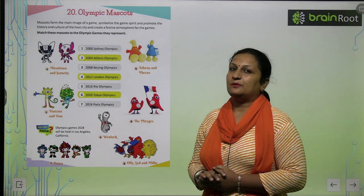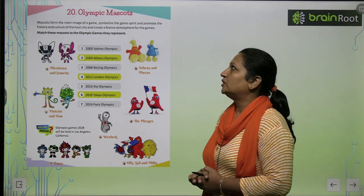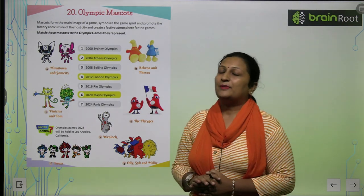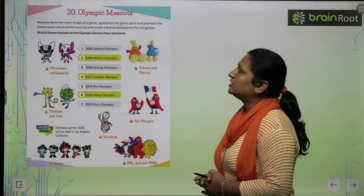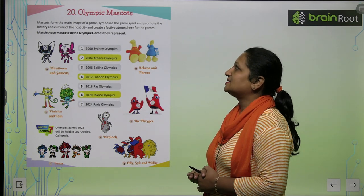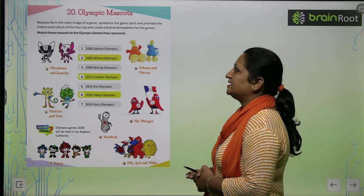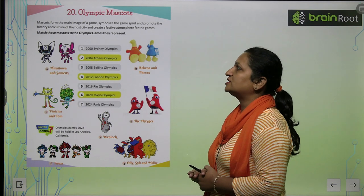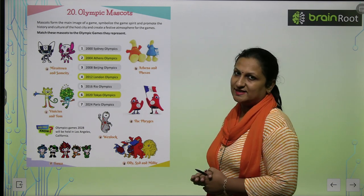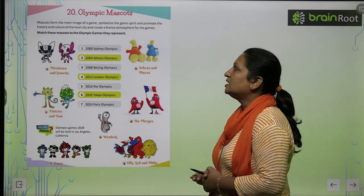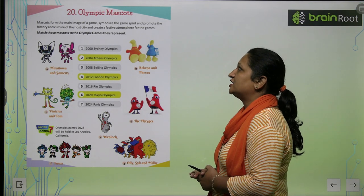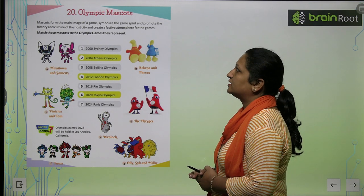Children, let's begin with chapter number 20: Olympic mascots. Mascots form the main image of the game, symbolize the game spirit, and promote the history and culture of the host city, and create a festive atmosphere for the games.